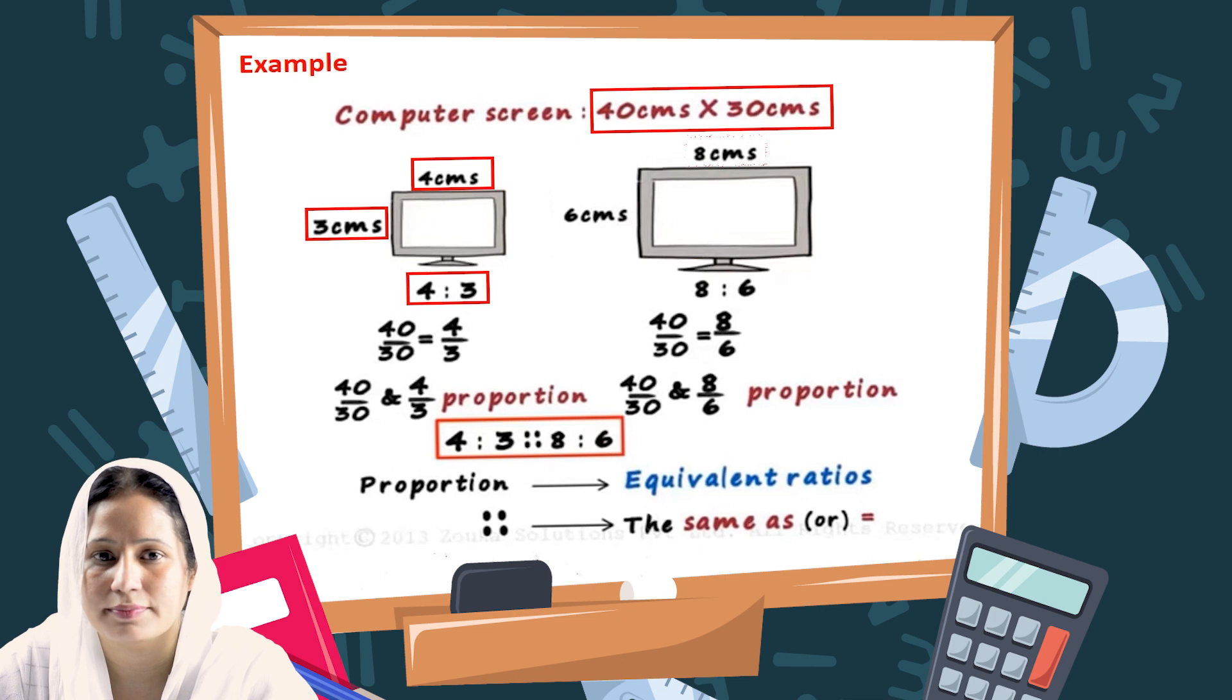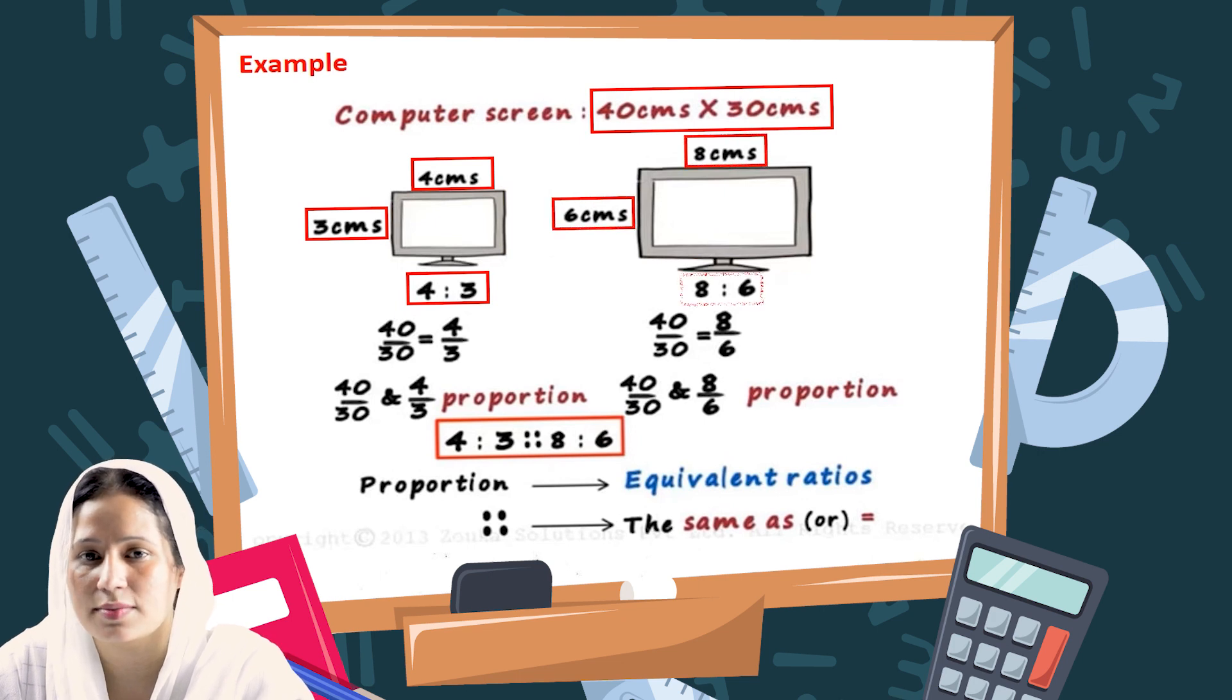Similarly, if we scale down 40 centimeters by 30 centimeters to 8 centimeters by 6 centimeters, we'll draw again a screen on our notebook of 8 by 6 centimeters. You can observe that 4 by 3 is actually 40 by 30 when we divide 40 and 30 by 10, we get 4 by 3.